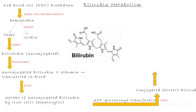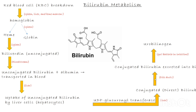The conjugated bilirubin is then secreted into bile, which is stored in the gallbladder or released directly into the small intestine. In the intestine, bacteria act on conjugated bilirubin and convert it into urobilinogen. Some urobilinogen is reabsorbed into the bloodstream, and the kidneys then filter it out as urobilin, giving urine its yellow color. The remaining urobilinogen is converted into stercobilin and excreted in feces, giving stool its brown color.